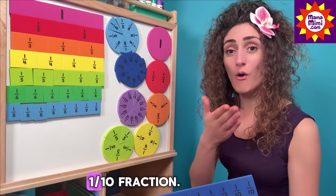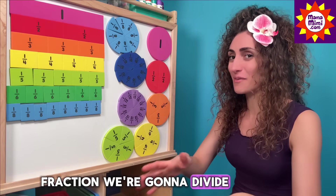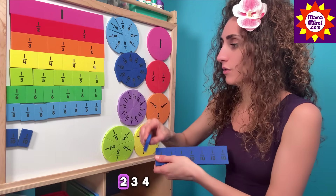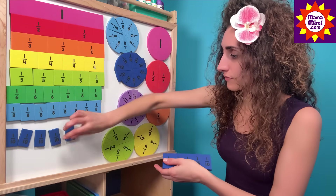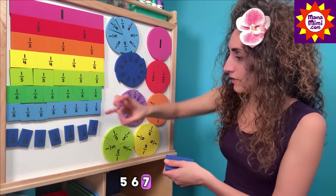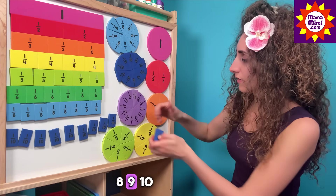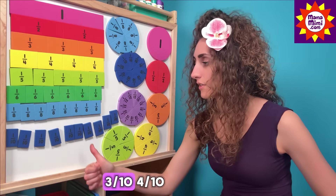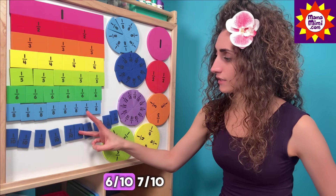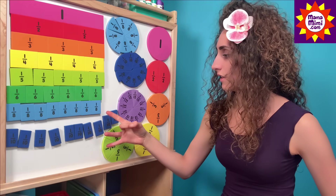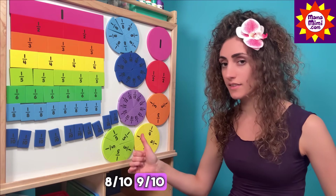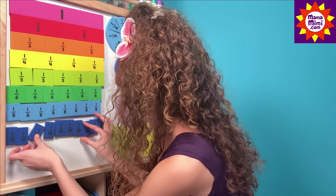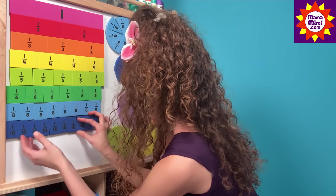This is tenths. One over ten. Fraction. We're going to divide by ten — ready? One, two, three, four, five, six, seven, eight, nine, ten. So one-tenth, two-tenths, three-tenths, four-tenths, five-tenths, six-tenths, seven-tenths, eight-tenths, nine-tenths, ten-tenths. Ten over ten equals one!